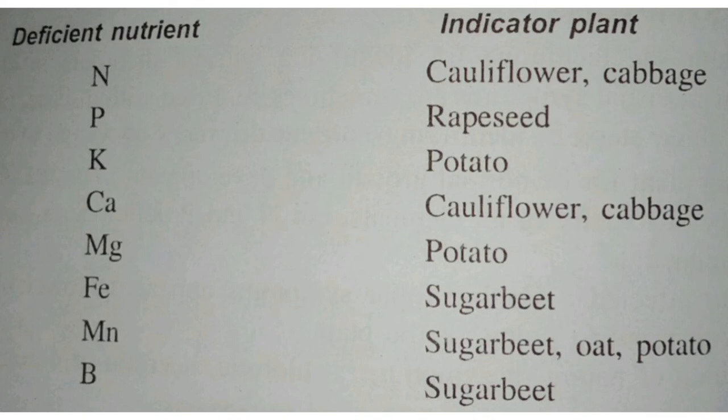Let's quickly revise: Cauliflower and cabbage — Nitrogen and Calcium. Rapeseed — Phosphorus. Potato — Potassium and Magnesium. Sugar beet — Iron, Manganese, and Boron. And with Manganese, also oat and potato. That covers all the indicator plants for deficient nutrients.